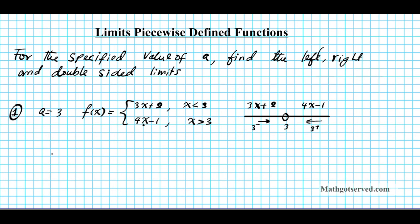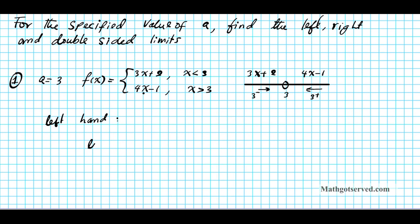Let's go ahead and find the left-hand limit first. The left-hand limit is the limit as x approaches three from the left of the function. We substitute three from the left into the function on the left side of three, which is three x plus two. So three times three plus two gives us nine plus two, which equals eleven.